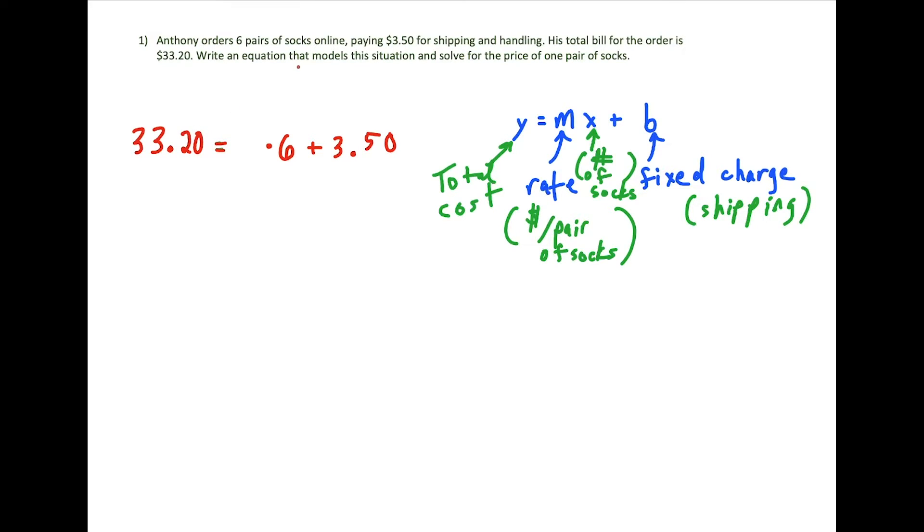The question is, we have to first write an equation, which is what we're doing, but we want to solve for the price of one pair of socks. So that's the rate that we're solving for. So if we clean up this equation a little bit, we have 33.20 equals 6m plus 3.50. So all we have to do is solve this linear equation for m and we'll be done.